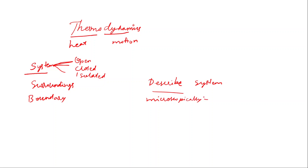We can describe a system at the microscopic level, which deals with molecular-level properties at a very small scale, or at the macroscopic level, which deals with human-level observable properties.